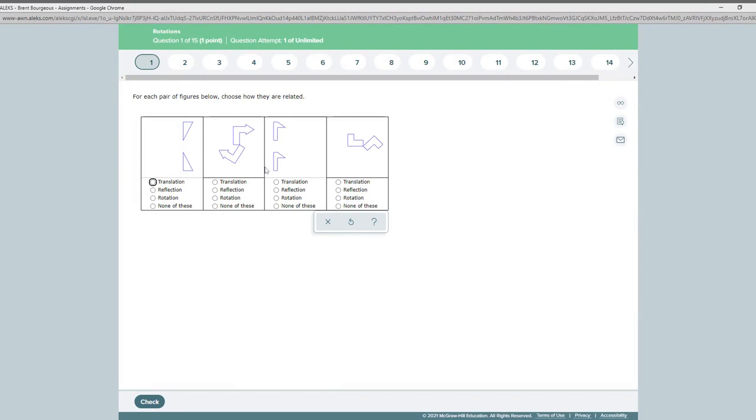When you're in your ALEKS assignment, these are the kind of questions that you're going to see. This first question or two, you're just going to describe the translation that is taking place here, whether it's a reflection or rotation or just a regular translation.